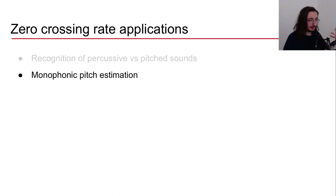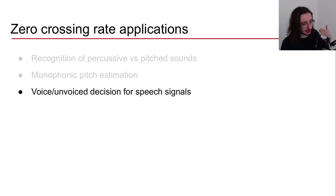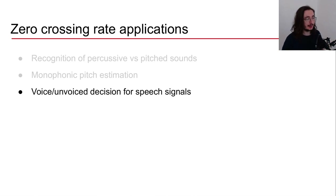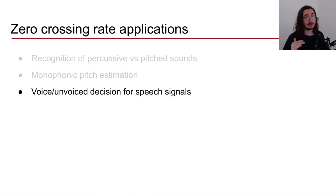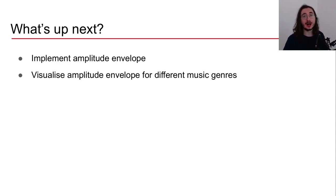While zero crossing rate is not a bulletproof pitch estimator — we now have far more sophisticated monophonic pitch estimators — it still provides a basic idea. In speech recognition, zero crossing rate can also distinguish voiced from unvoiced signal segments, since voiced signals tend to have a lower zero crossing rate than noisier unvoiced portions.